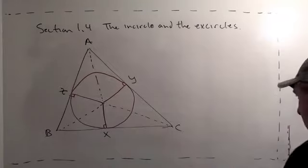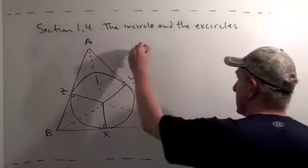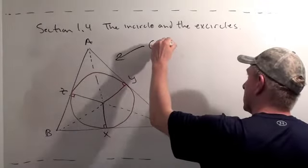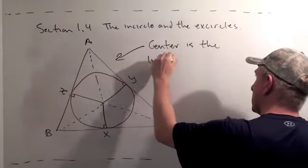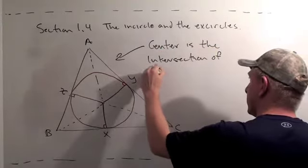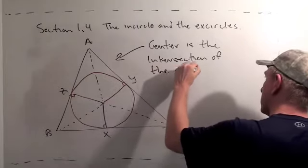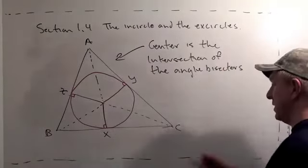So, the first part of this section talks about the inscribed circle in a triangle. We mentioned in Section 1.3 that the center of the inscribed triangle is at the intersection of the angle bisectors. The center is the intersection of the angle bisectors, and that's called the incenter.